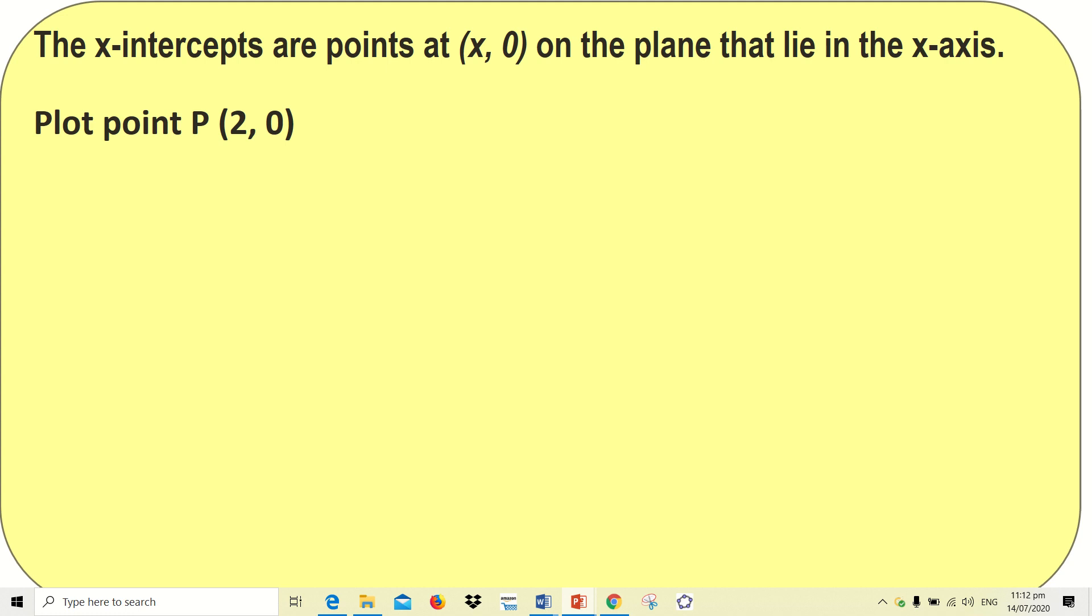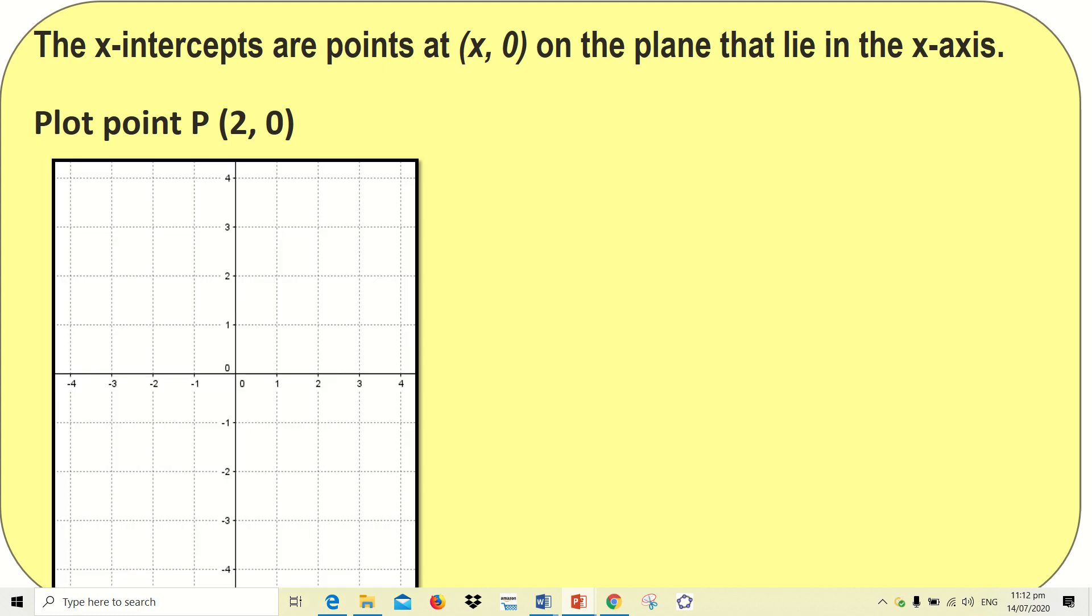We will now plot point P. Point P is composed of (2, 0). Your x is 2 and your y is equal to 0. So we'll now plot. Since your x is 2, we'll lightly sketch a vertical line on the x-axis which is 2.